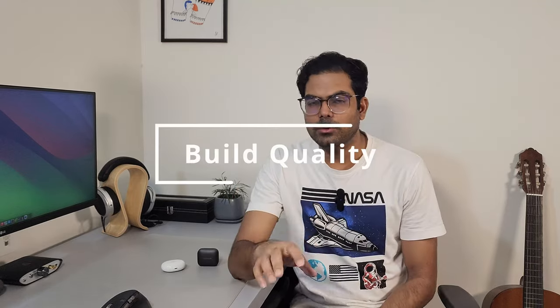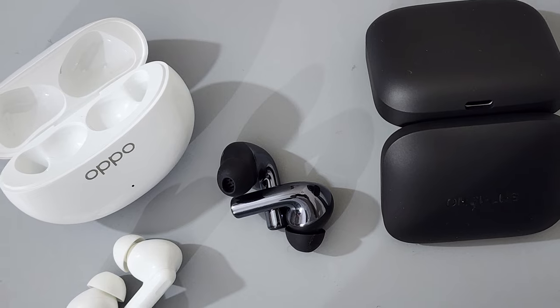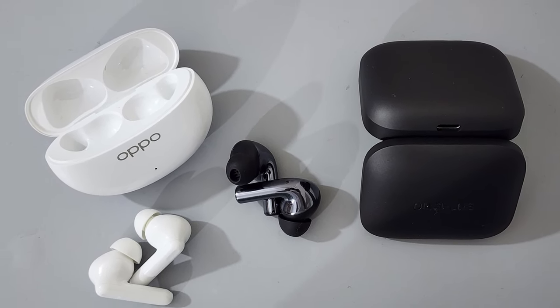Let's start with the foundation, the build quality. Both are plastic build which is not very uncommon for this price range. However, out of these two, they are very similar in build quality. However, OnePlus Buds 3 feels more premium and they have a very minimal look. While Oppo's buds are good quality as well, they might not feel as premium as OnePlus Buds 3. So OnePlus takes the lead here having a little bit more premium feel.